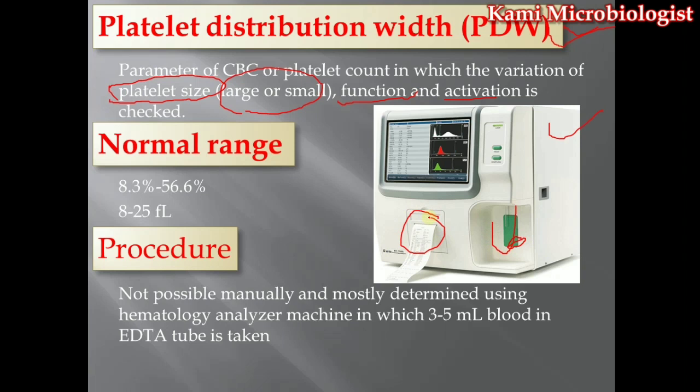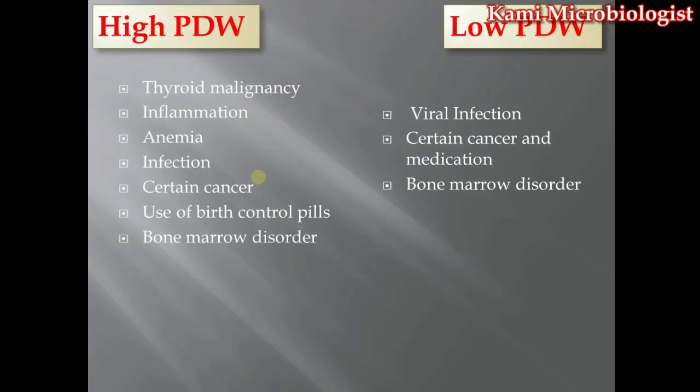The normal range of PDW is 8.3 to 56.6 percent. If we talk about femtoliters, it is 8 to 25 femtoliters. Now let's talk about the high and low PDW conditions.